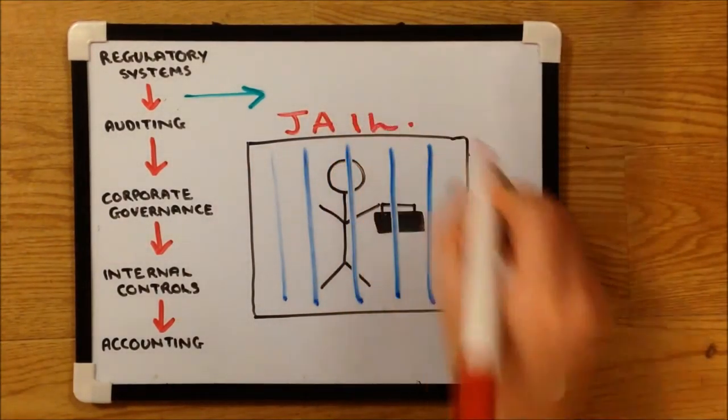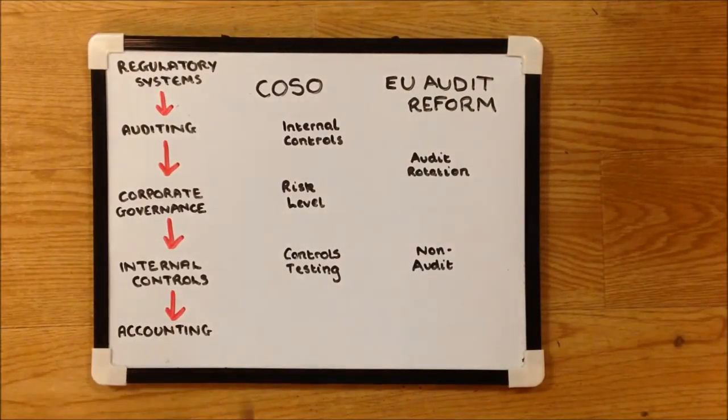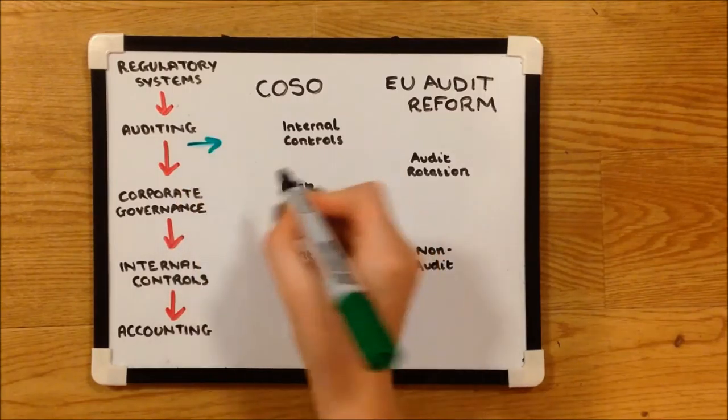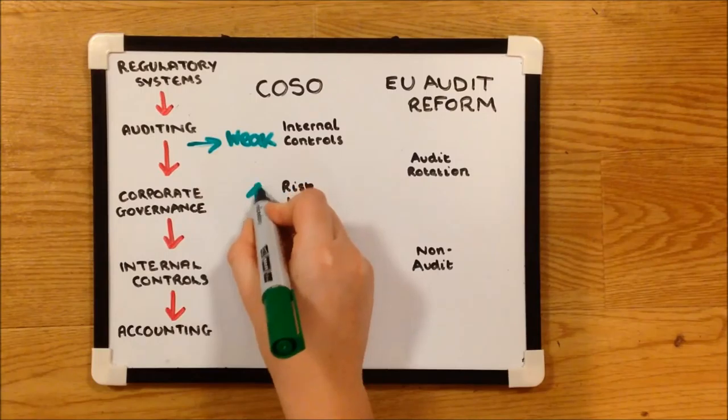For the systems lower down on the hierarchy, the COSO framework provides a model for good control. Let's start with the auditors. The COSO model states that weak internal control should lead to a higher risk level, which in turn should lead to more controls testing.